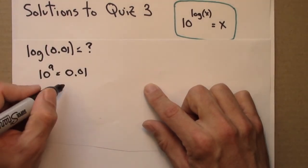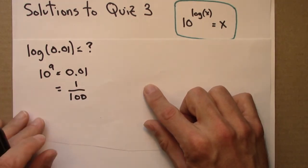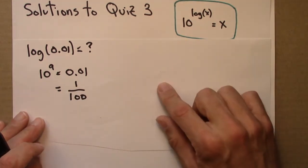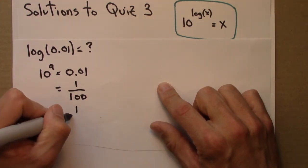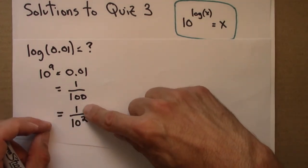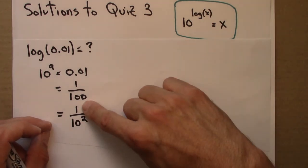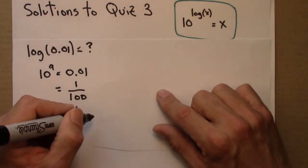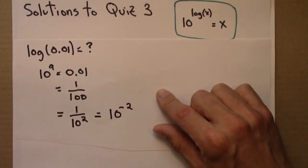And it may help if I write 0.01. That's 1 over 100, right? And that's what decimals mean. And 1 over 100, that's 1 over 10 squared. And that exponent rule we learned, 1 over 10 to the 2 is the same thing as 10 to the minus 2.